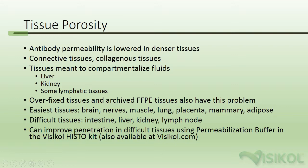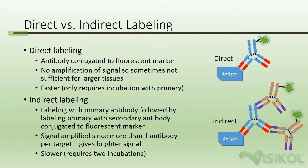You can improve penetration in difficult tissues using the permeabilization buffer included in the Visicol Histo Kit, also available at Visicol.com. Direct labeling involves an antibody conjugated directly to a fluorescent marker. There is no amplification of the signal, so sometimes the signal is not sufficient in larger tissues, though it is faster since it only requires incubation with the primary antibody. Indirect labeling is slightly more laborious but allows for amplification of the signal, since more than one secondary antibody can bind per target, requiring two incubations.